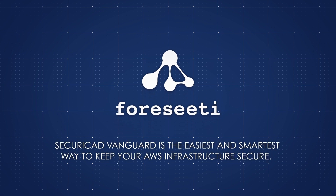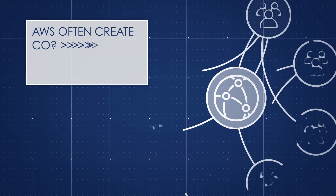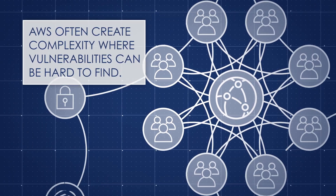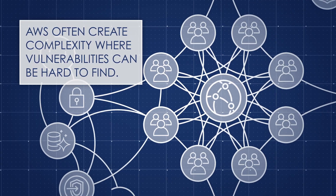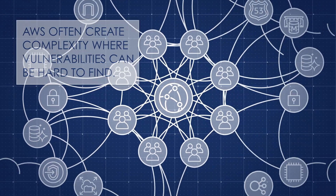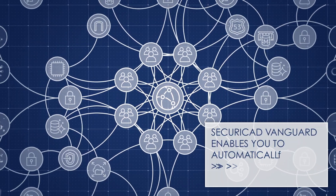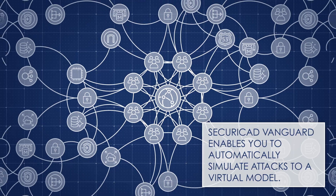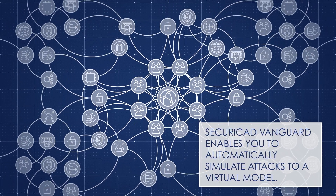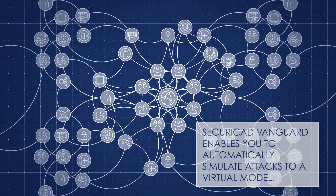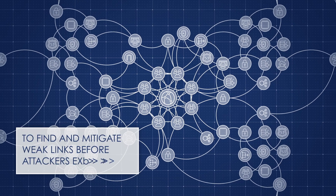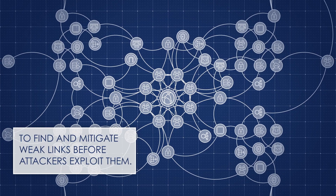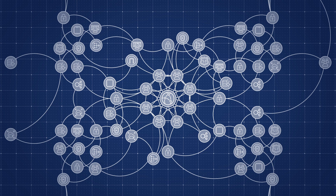SecureCAD Vanguard is the easiest and smartest way to keep your AWS infrastructure secure. The fast upscaling possibilities in AWS often create complexity where potential vulnerabilities can be hard to find and evaluate. SecureCAD Vanguard enables you to automatically simulate attacks to a virtual model of your AWS environment, to find, prioritize, and mitigate weak links before attackers exploit them.